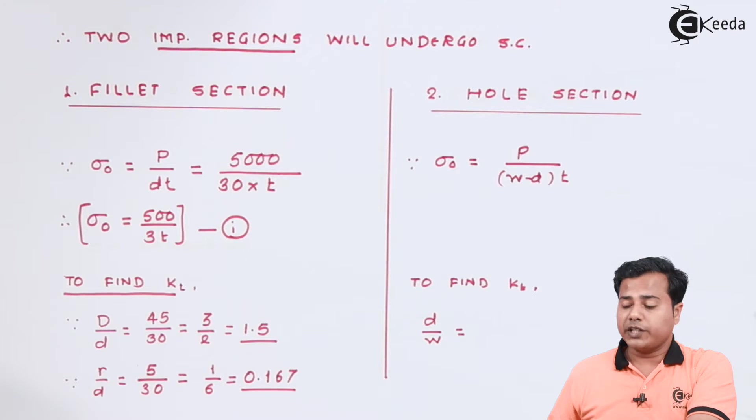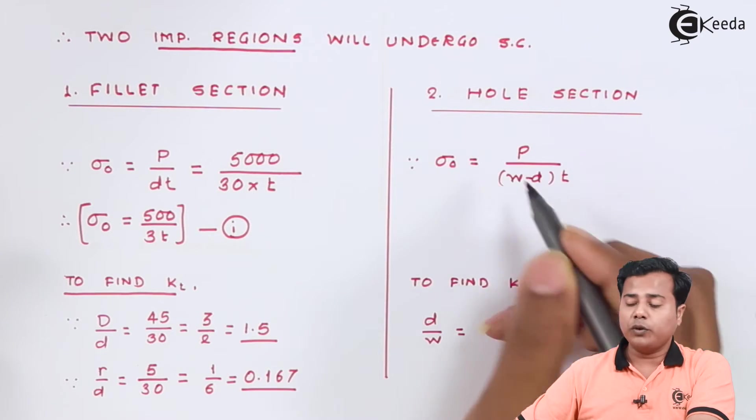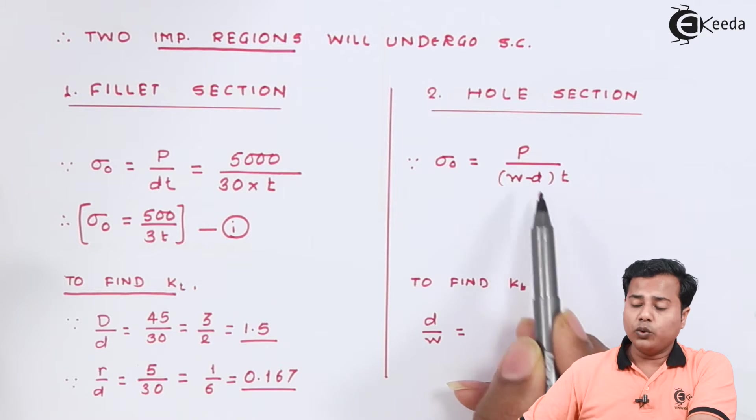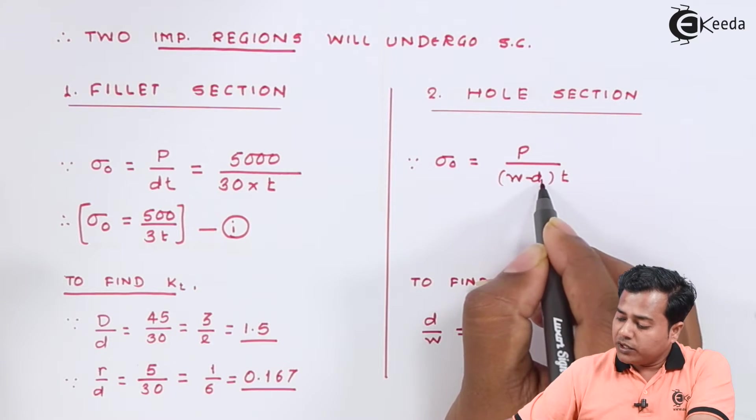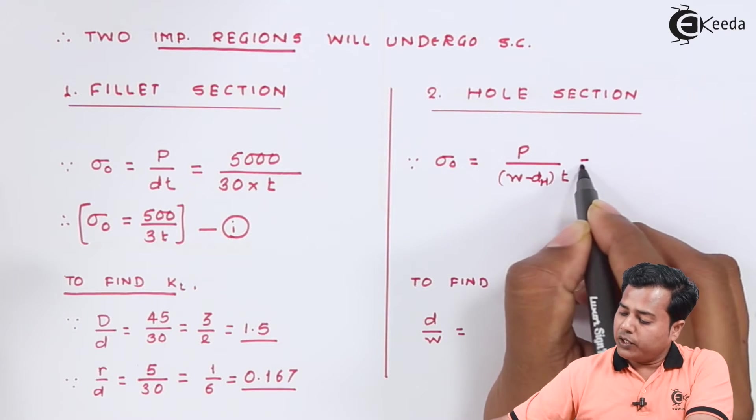In hole section the nominal stress value will be given by this particular formula where d is the diameter of the hole. Let me mention diameter of hole here. If I substitute the value of 5000 divided by the larger width in our case is 45 minus diameter of hole becomes 15.